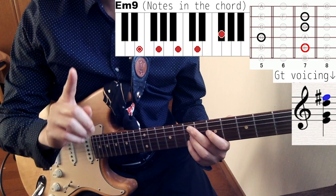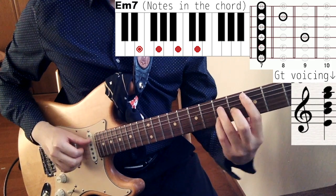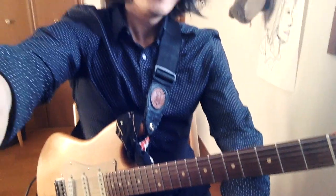But if you don't want this effect, you can use a normal minor 7 instead of minor 9. This is E minor 7.